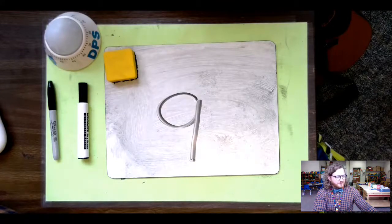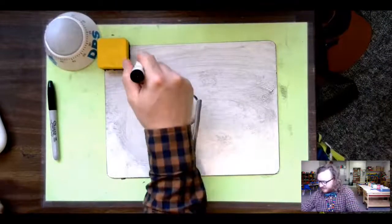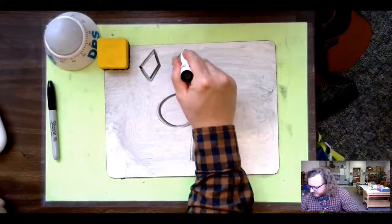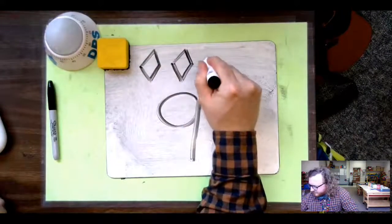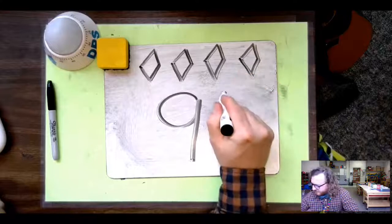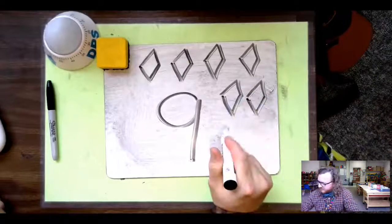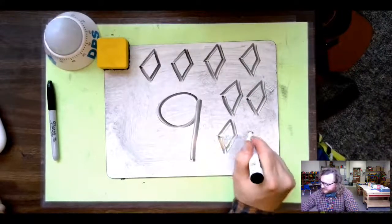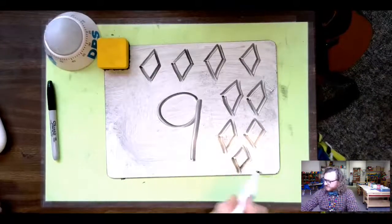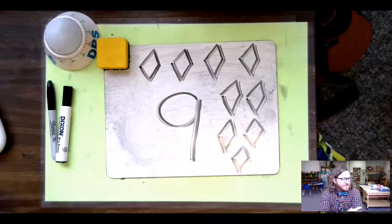What are those squiggly lines? Rhombus. It looks like this. One. Two. Three. Four. Five. Six. Seven. Eight. Nine. Nine rhombuses kind of look like kites, if you've ever flown a kite before.